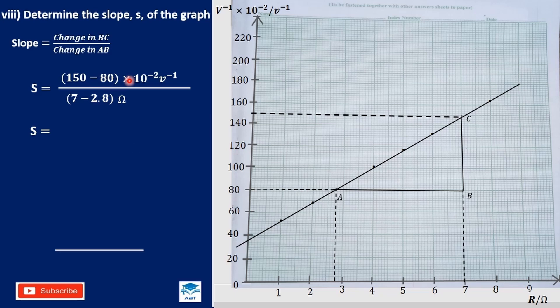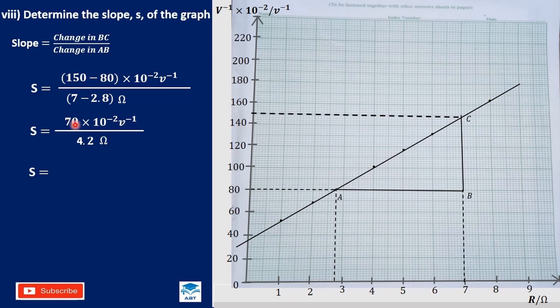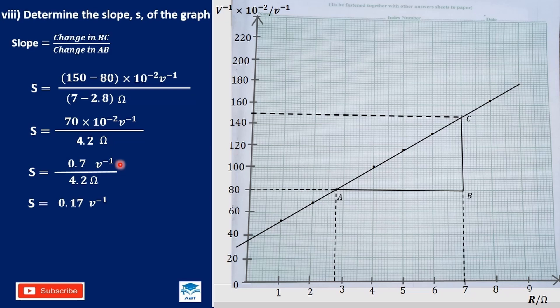So 150 minus 80 gives us 70, times 10 exponent negative 2 per volt. And 7 minus 2.8 is 4.2 ohms. Converting, 70 times 10 exponent negative 2 is 0.7 per volt, divided by 4.2 ohms. So 0.7 divided by 4.2 gives us 0.17 to two decimal places. The units are per volt over ohms, so the unit for the slope is per ohm.